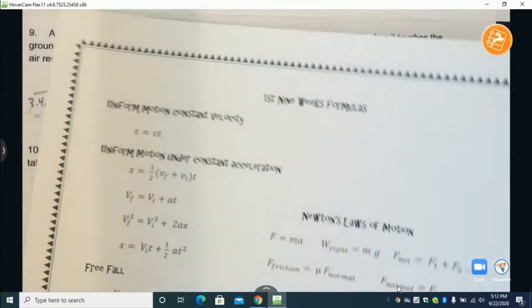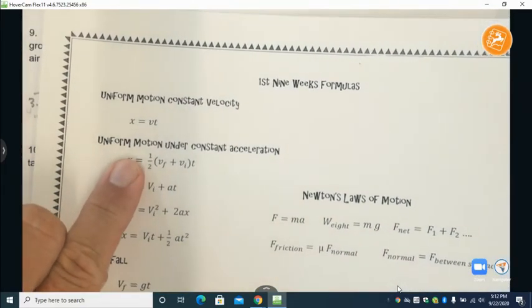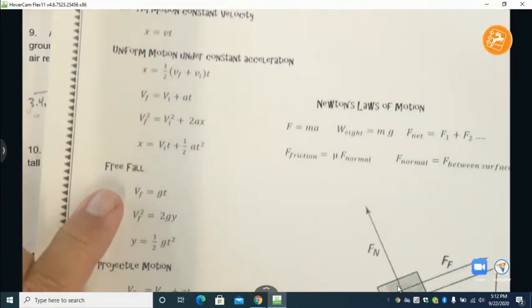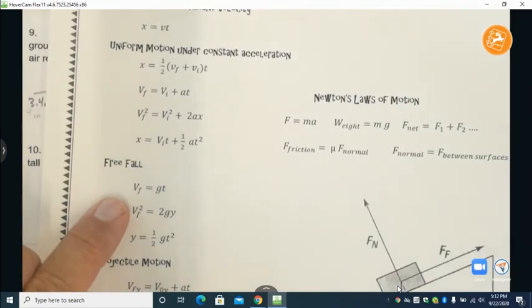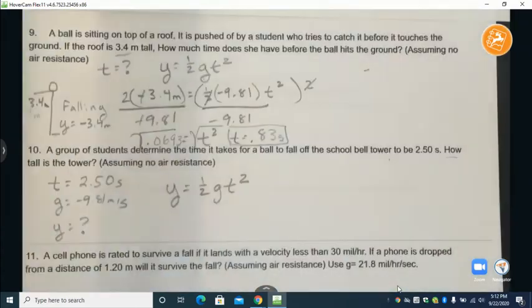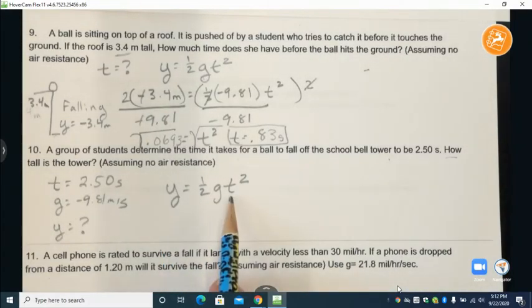Again we have an object that's accelerating so we want to choose from our acceleration equations, but this is a special acceleration only due to gravity where the initial velocity is equal to zero. So that allows us to jump to this expression here.